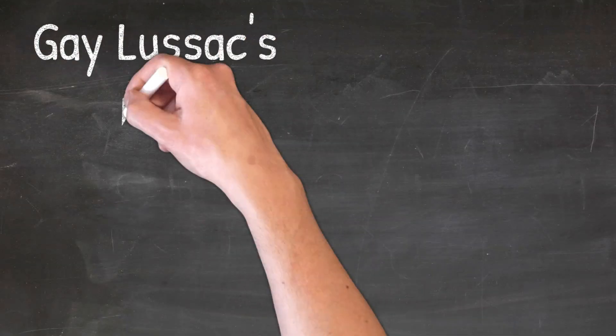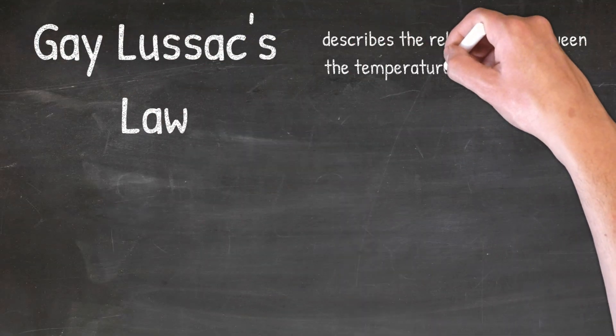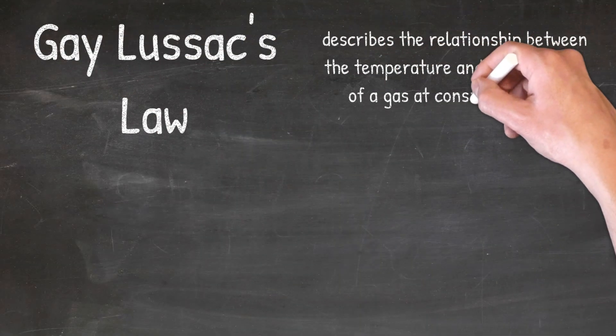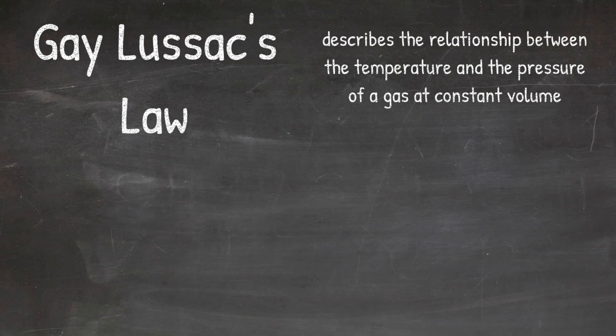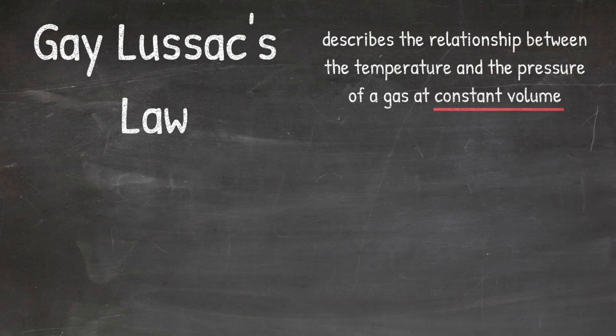Gay-Lussac's Law is a law that describes the relationship between the temperature and the pressure of a gas at constant volume. It is important to note that the volume is remaining constant because if the volume were changing, then that would also have an effect on the temperature and the pressure.